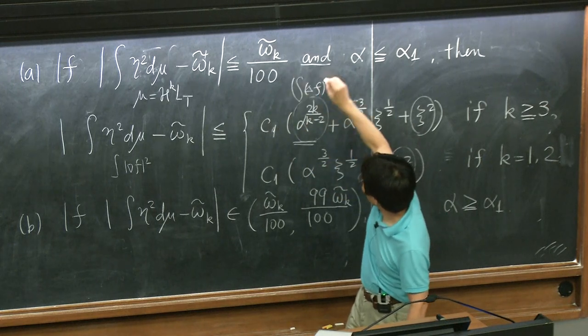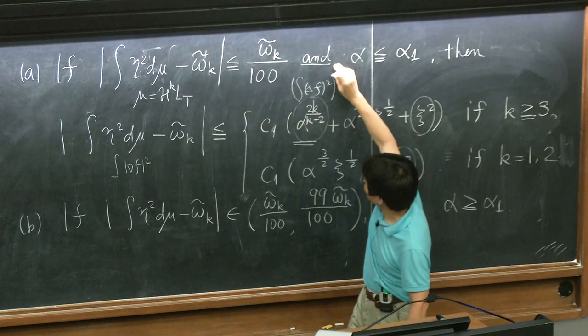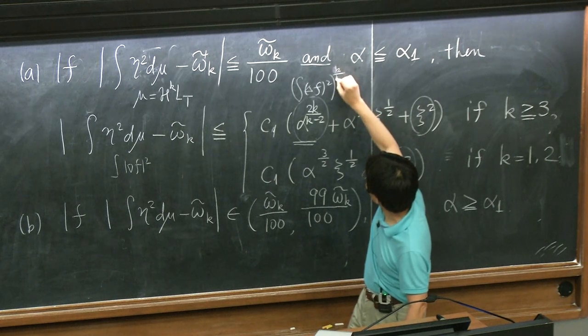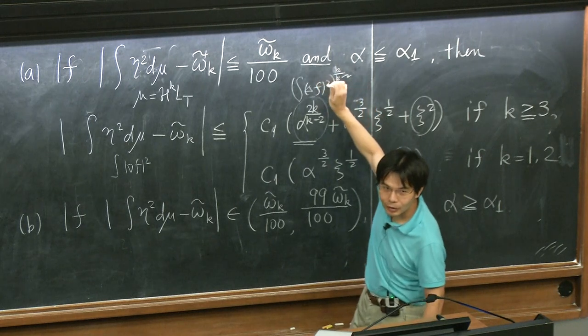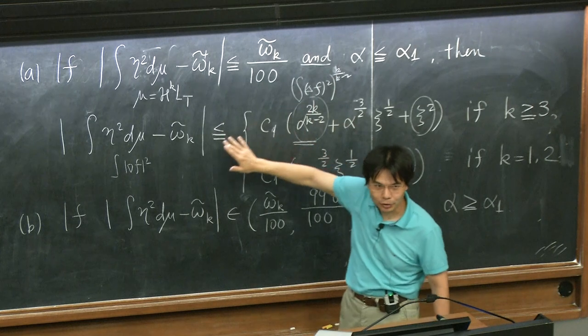You have to do a very careful covering argument, some estimate called a cylindrical growth estimate, and also some kind of Lipschitz approximation at this level already to get this. I've written a very careful proof for this in my paper, so if you're interested, please take a look.